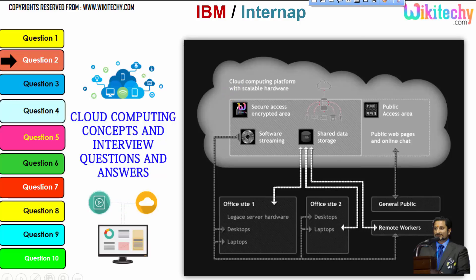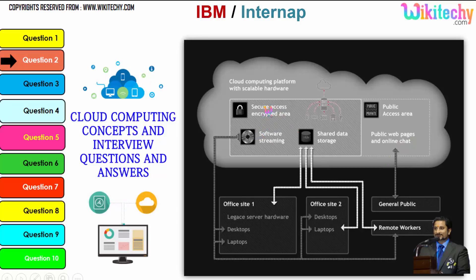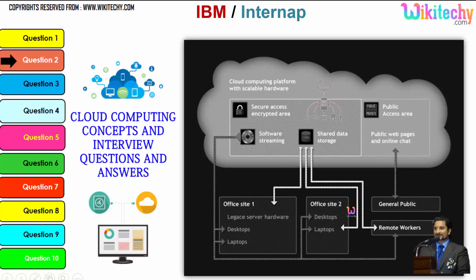Cloud computing provides a public access area and public web pages for end users. Apart from this, there is secure data access, shared data storage, and software streaming. Companies can use it as a private cloud, and the public can use it to access web pages or websites. This is how cloud computing works.